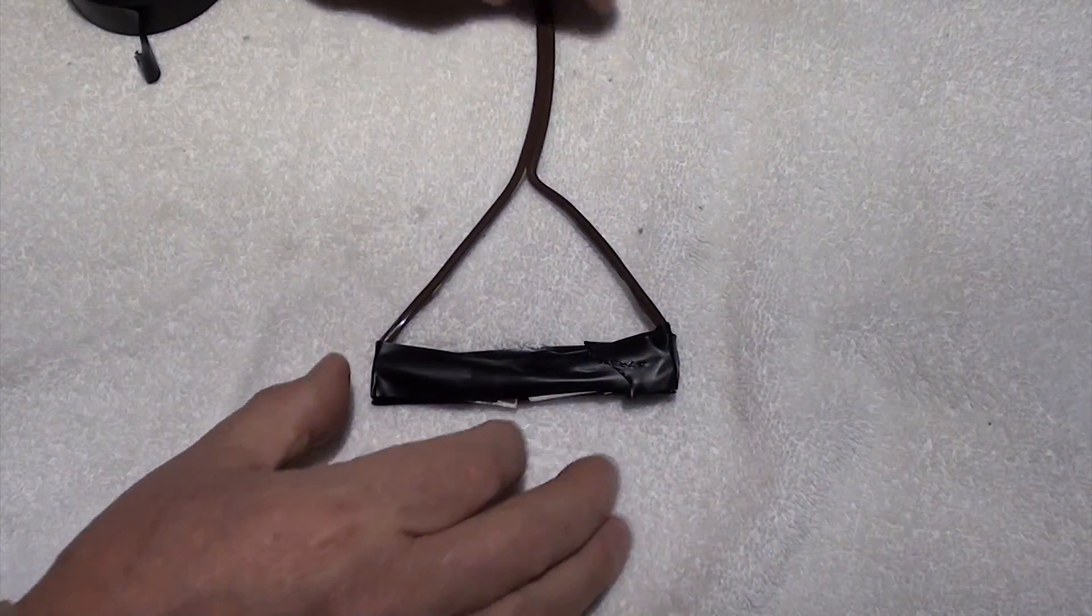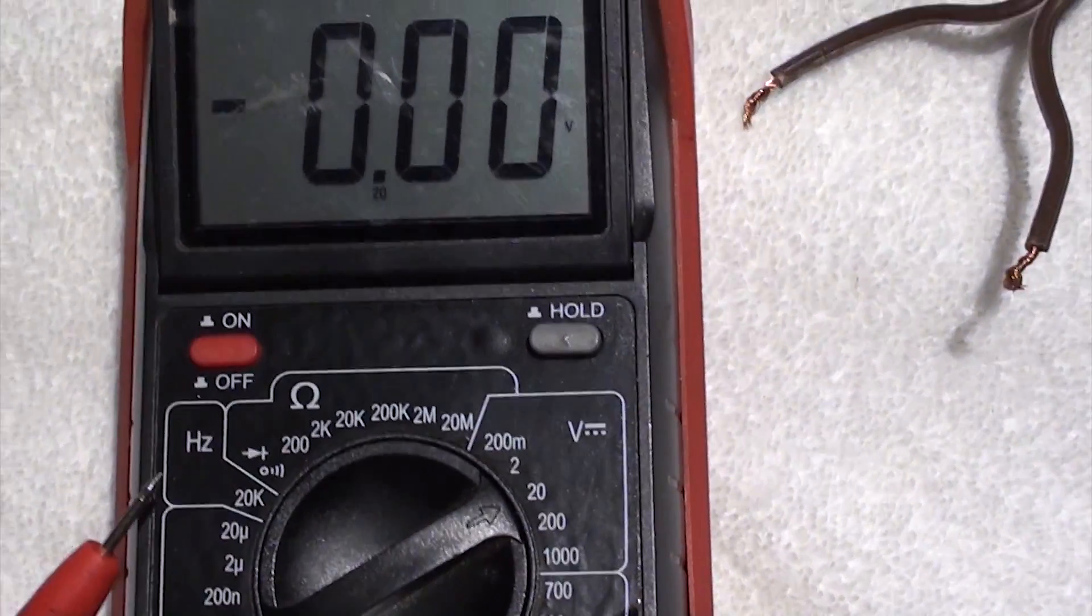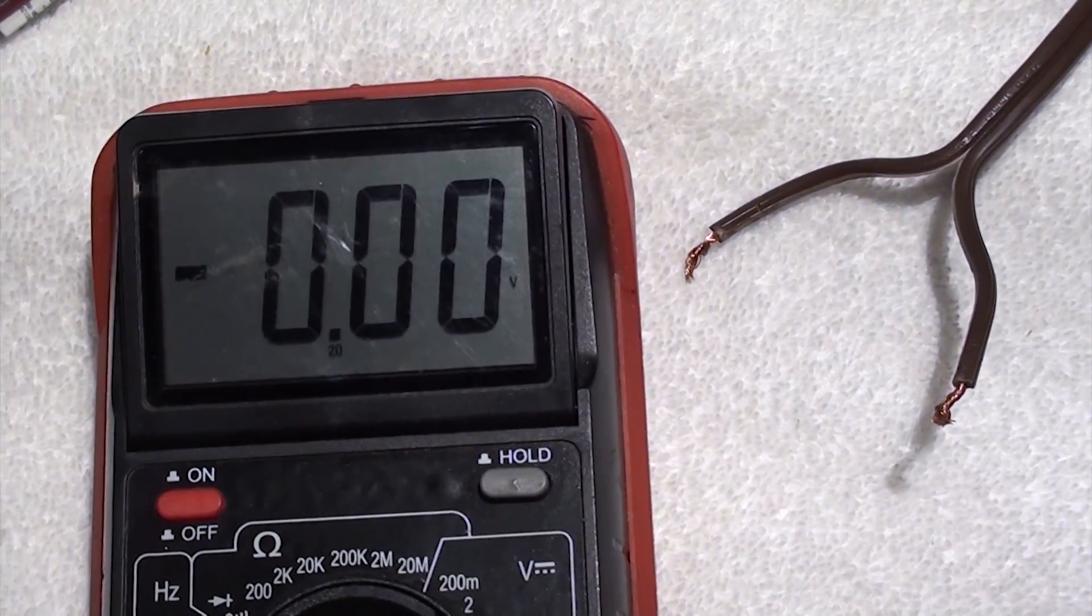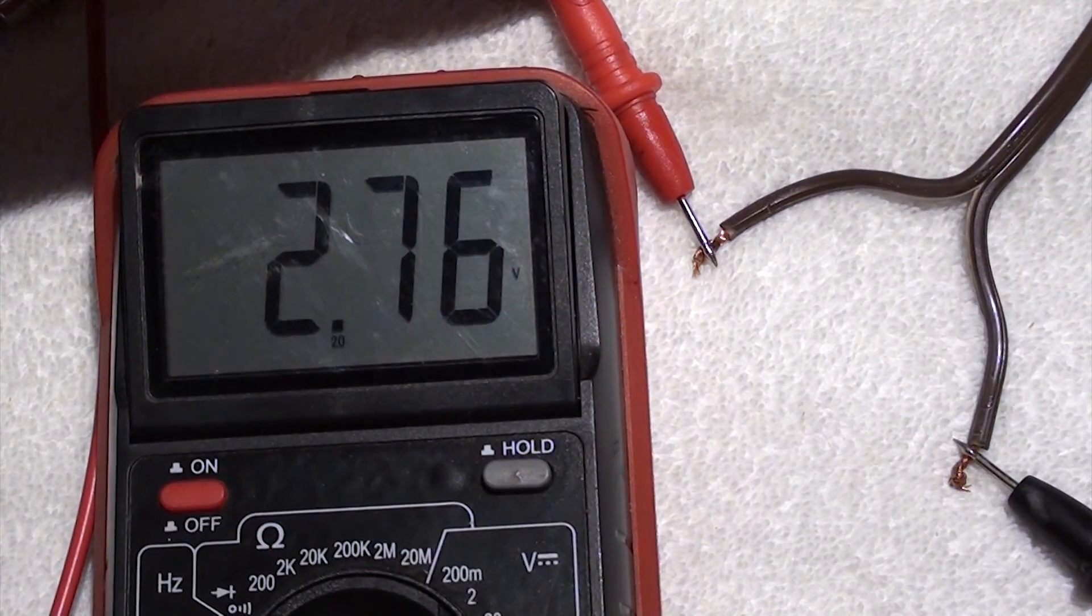See how easy that was? Now we're going to move the multimeter to the position of 20 volts. We should have approximately three volts coming out of the wires here.